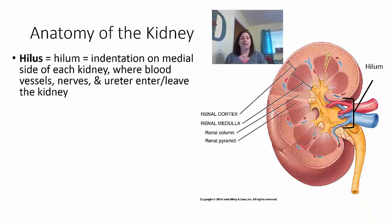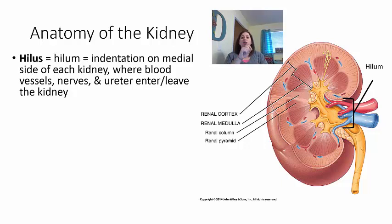Looking at the anatomy of the kidney itself, we have the hilus or hilum — an indentation on the medial side of each kidney. This is where blood vessels and nerves enter, as well as where the ureter leaves. The renal artery and renal vein come in here along with the main nerve, and the ureter attaches here connecting the kidney to the bladder.